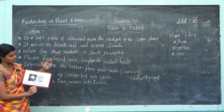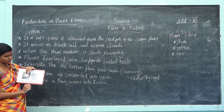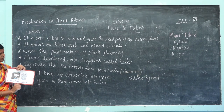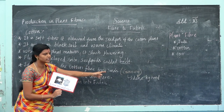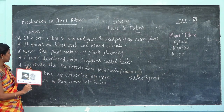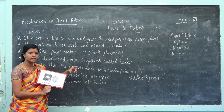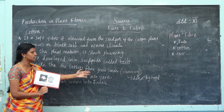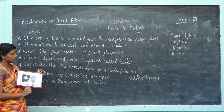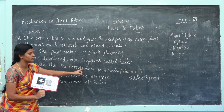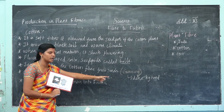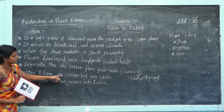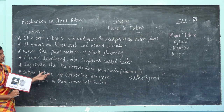The flowers develop into seed parts. Then we separate the cotton fibers from the seeds. This process is called ginning. Ginning is a process that separates the cotton fiber from seeds. It is done by hand, but nowadays we use machines to remove the seeds. Cotton fibers are then converted into yarn.